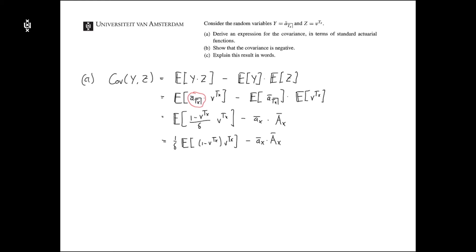And now, what do we see here? Well, this is equal to, well, let me write it down one more step. So we can write out this product. So we have expectation of tx, v tx, minus expectation of v tx squared.